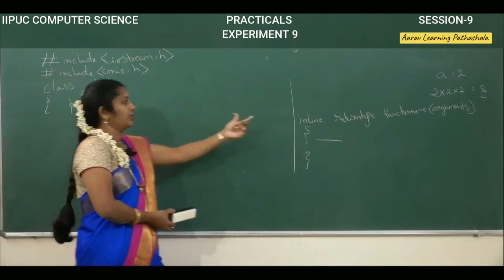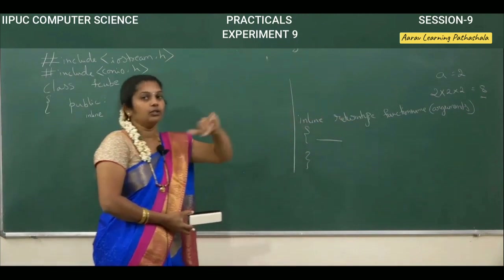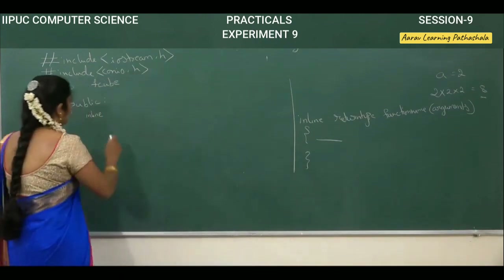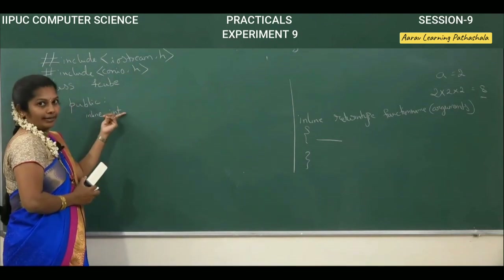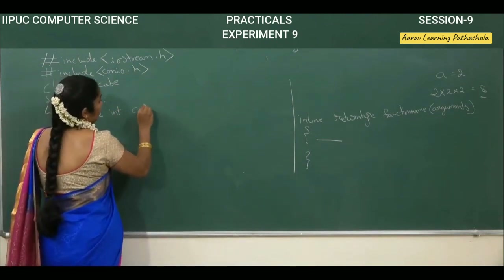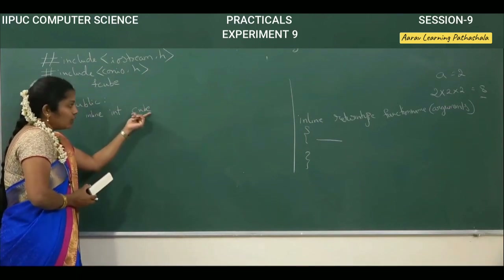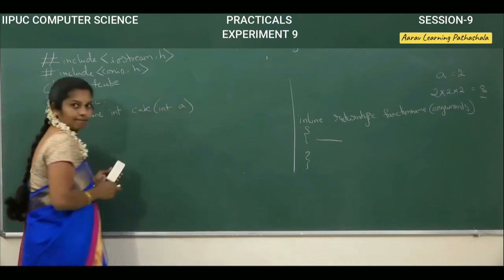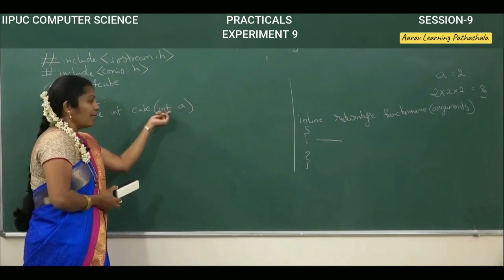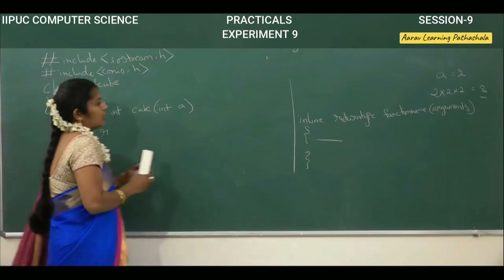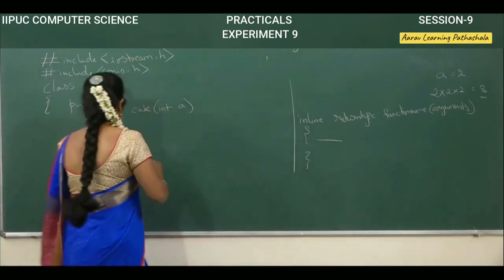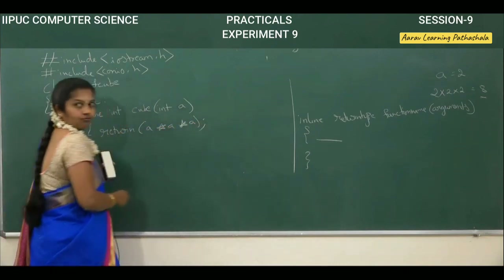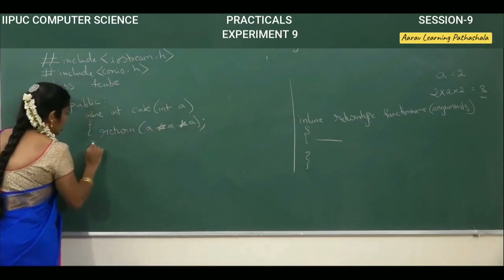In the public section, before calling the function it has to be declared — that is why we write public. Then we start with the keyword inline. Next, you write the return type — the value that will be generated after calculation. I am writing integer format as the return type. The function name is cube, and inside the bracket, int a is the argument.